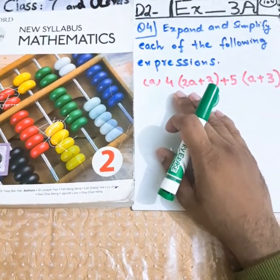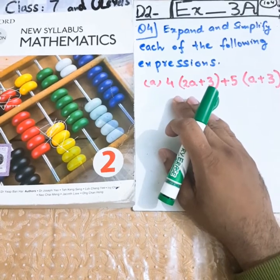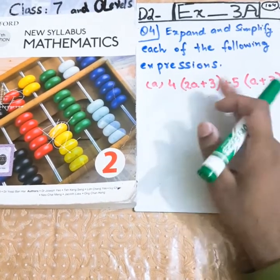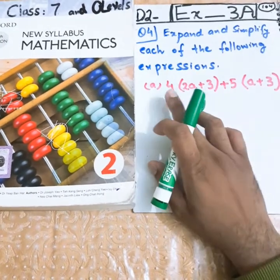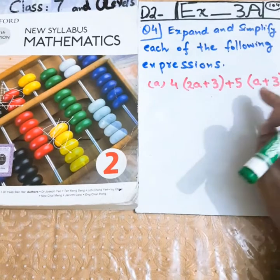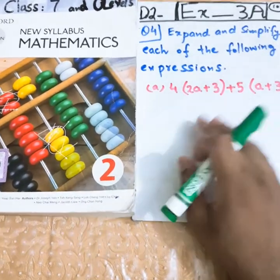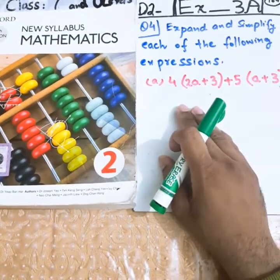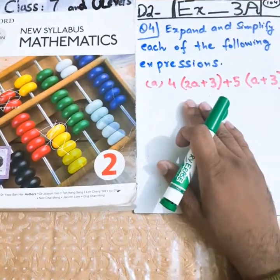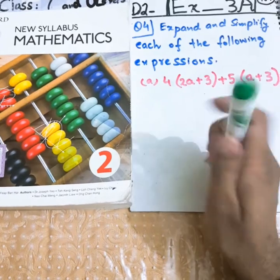You must have a copy or register to note down my lecture. This is the basic requirement to listen to online mathematics especially. Part a is 4(2a+3)+5(a+3). You can stop the video here and note down the question first. If you have noted it down, now listen to me carefully.